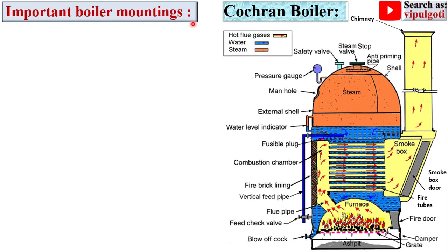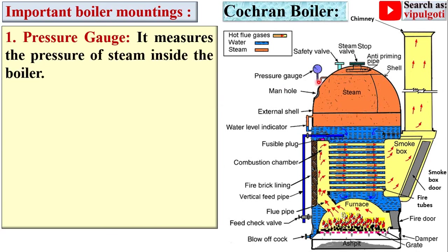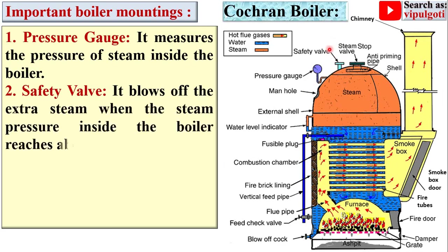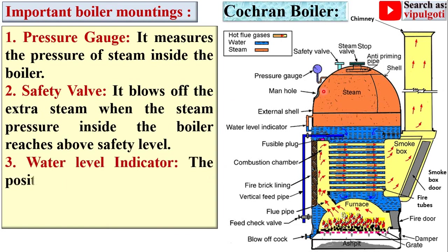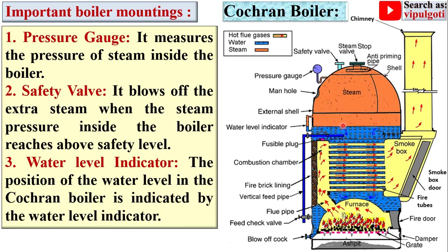Now the important boiler mountings. First, the pressure gauge measures the pressure of the steam inside the boiler. The safety valve blows off extra steam when steam pressure inside the boiler rises above the safety level. The water level indicator shows the position of the water level in the Cochran boiler.